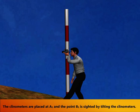The clinometers are placed at A1 and the point B1 is sighted by tilting the clinometers.